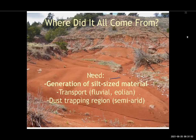One question is: there's a lot of dust in the western US and western equatorial Pangea, which is kind of strange because it's equatorial. Where did it all come from? You need to generate a lot of silt-size material, then transport it — probably a combination of both river and wind transport — and then trap it in a dust-trapping region.